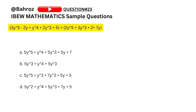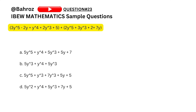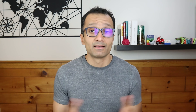The last question: add all the y to the power of 5 terms — 3y to the power of 5 plus 2y to the power of 5 becomes 5y to the power of 5. Options A and C have that, so we eliminate B and D. Looking at the constant terms: 5 plus 2 equals 7. Option C doesn't have 7, but option A does, so A is our answer. Thank you for watching this video — hopefully you will now be able to ace your IBEW aptitude test. Best of luck!